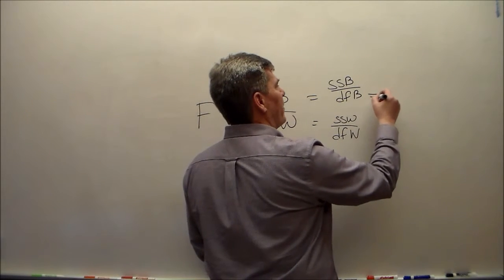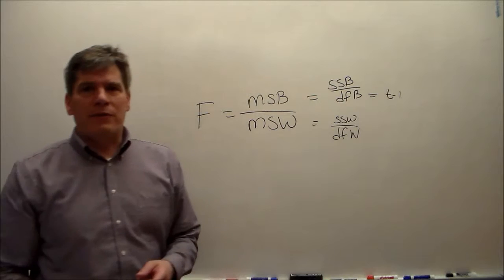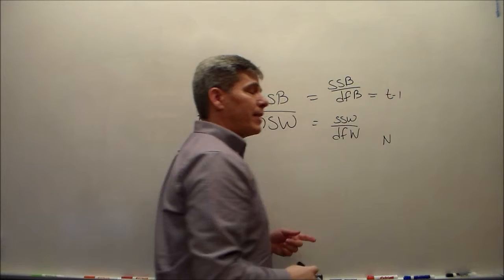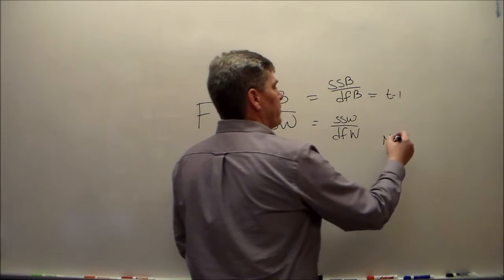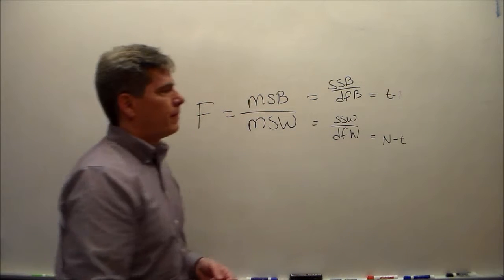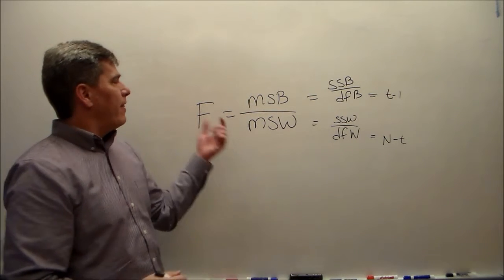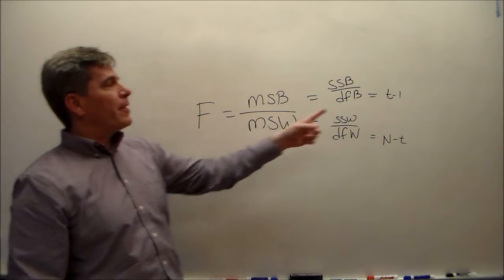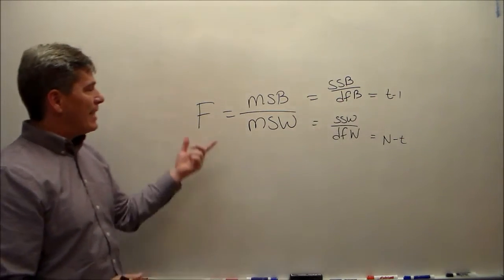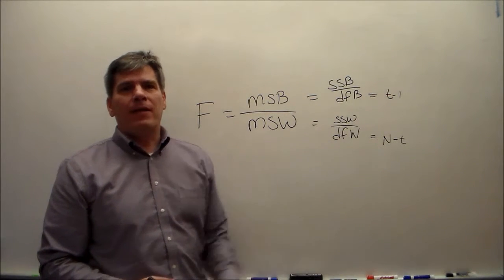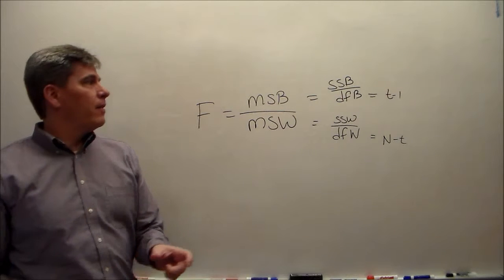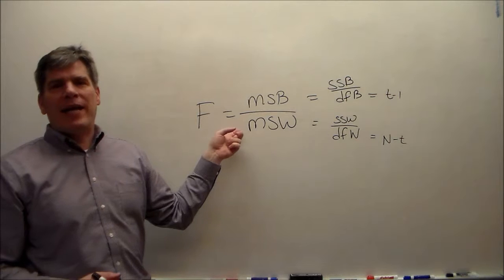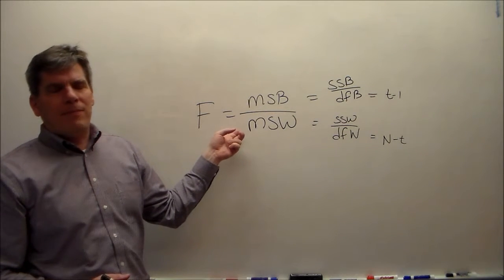Remember that DFB is equal to T minus one — the number of groups. And DFW is the total sample size, big N, minus the number of groups. This has an F distribution with numerator degrees of freedom T minus one, and denominator degrees of freedom N minus T, if and only if the mean squared between has a chi-squared distribution and the mean squared within has a chi-squared distribution.